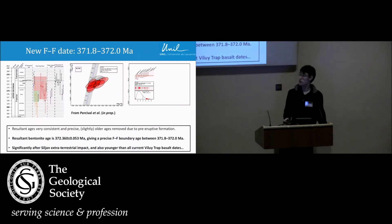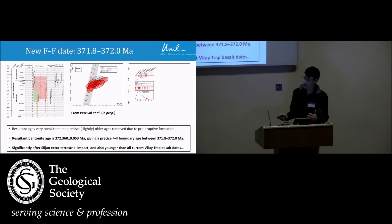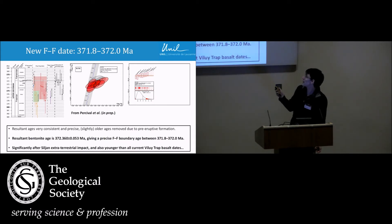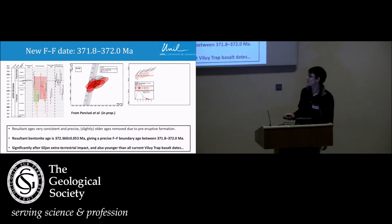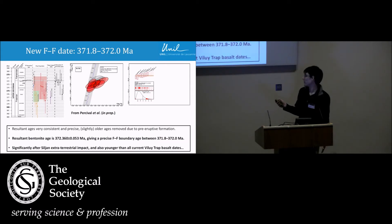Sadly, I don't have any pretty pictures of zircons to show you — the zircons were beautiful, though, and gave really good, nice ages. Even when we removed the older ages — which you generally have to do when dealing with zircon ages, because they crystallise in the magma chamber and the actual age of eruption is given by the youngest zircons — even the oldest zircons were still pretty close. The youngest zircons give us an age of 372.36 million years, plus or minus 50,000 years — much more precise than anything we've had before.